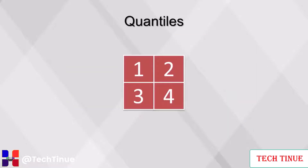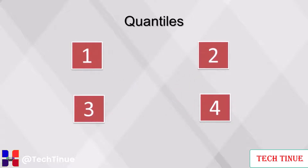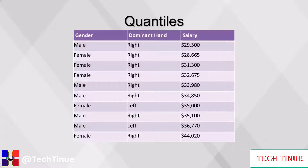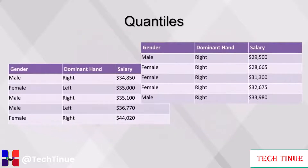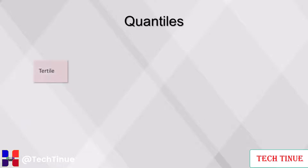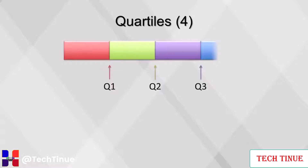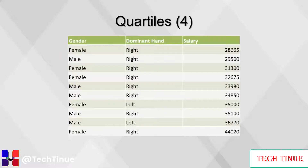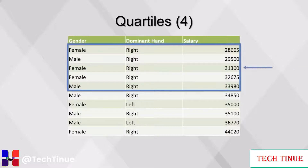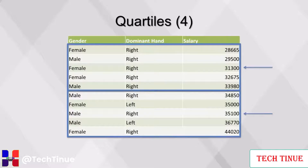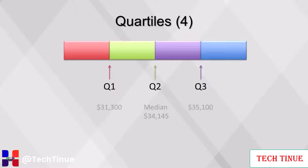A quantile is a set of values that divide a frequency distribution into equal groups, each containing the same fraction of the total population. To find quantiles, divide the distribution into groups of equal size. The most simple quantile is the median, which divides records into two groups. The most often used quantiles are: tertiles (3 groups), quartiles (4 groups), quintiles (5 groups), deciles (10 groups), and percentiles (100 groups). For quartiles, the median is commonly referred to as Q2. To calculate Q1, look at the middle value of the first five records sorted in order: $31,300. Q3 is the middle value of the last five records: $35,100. This concludes our video on measures of distribution.